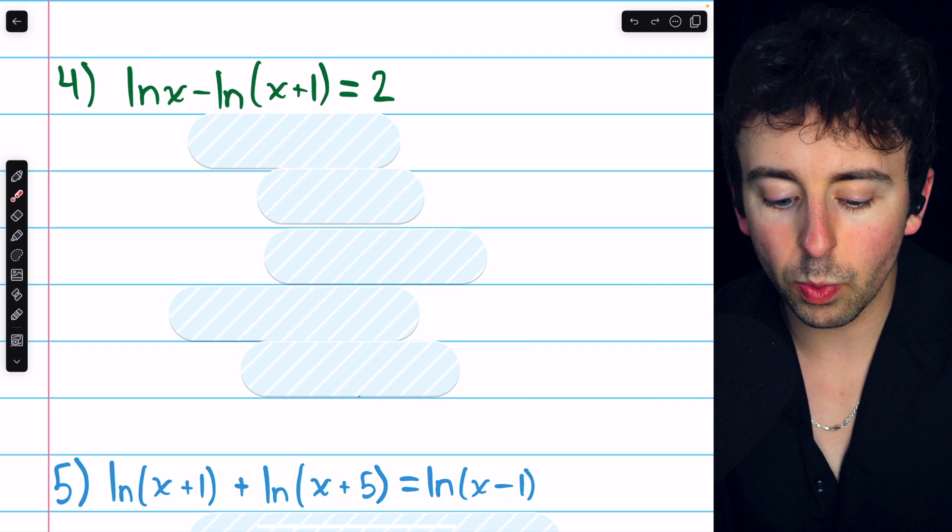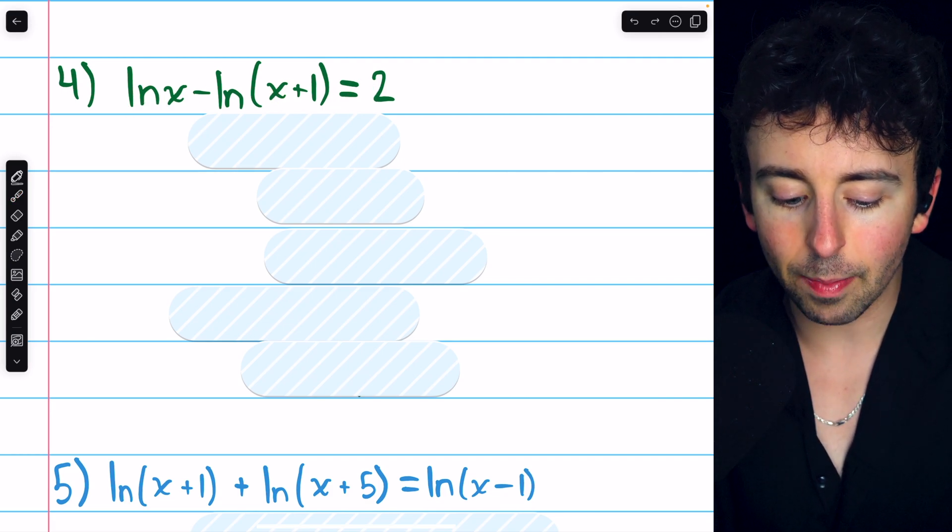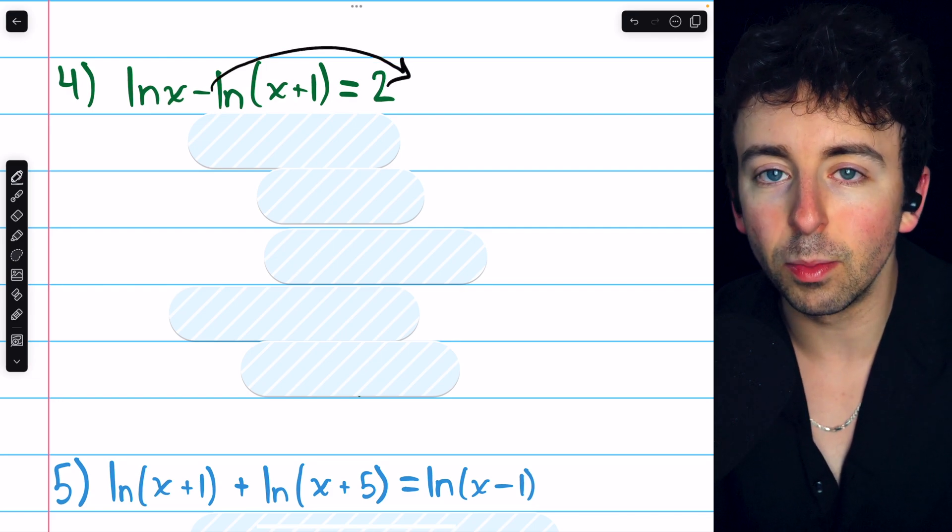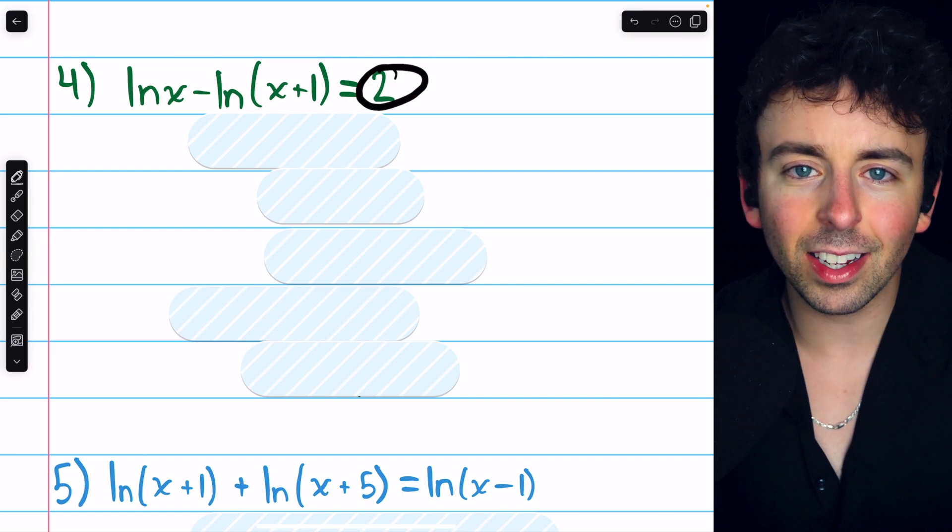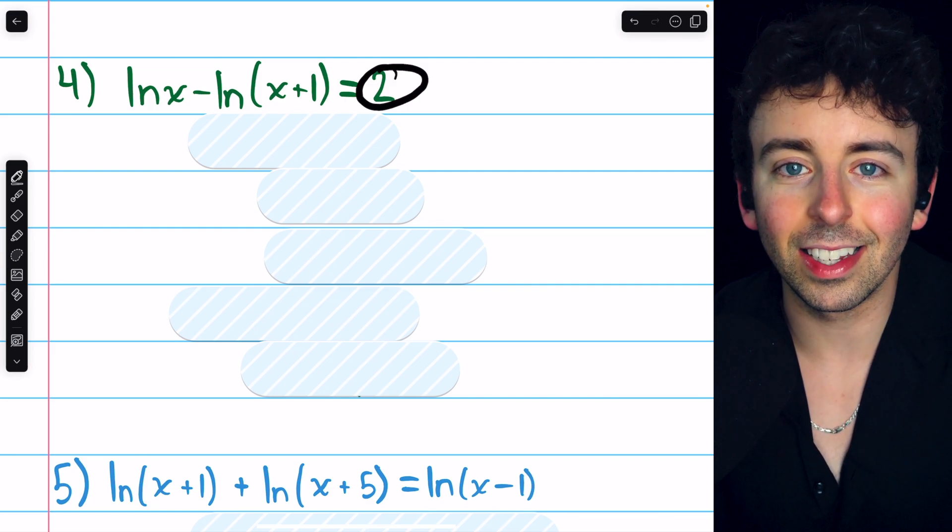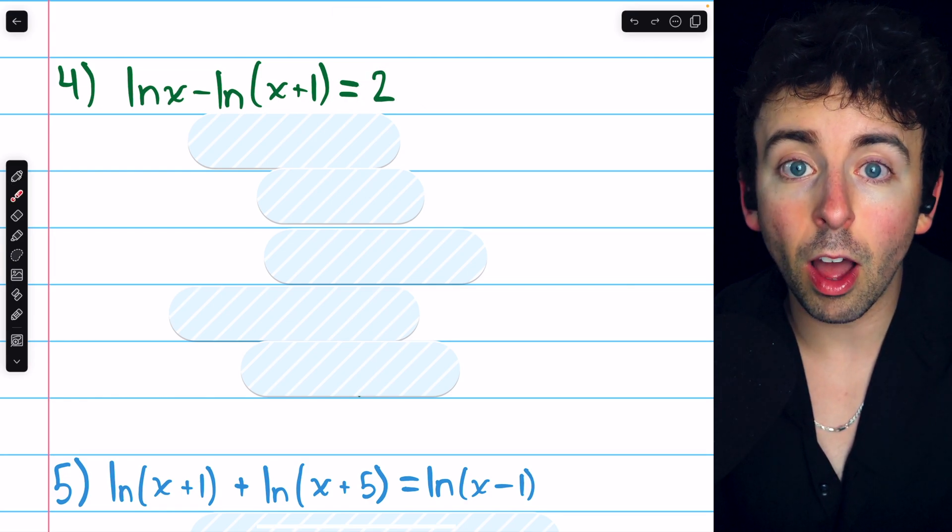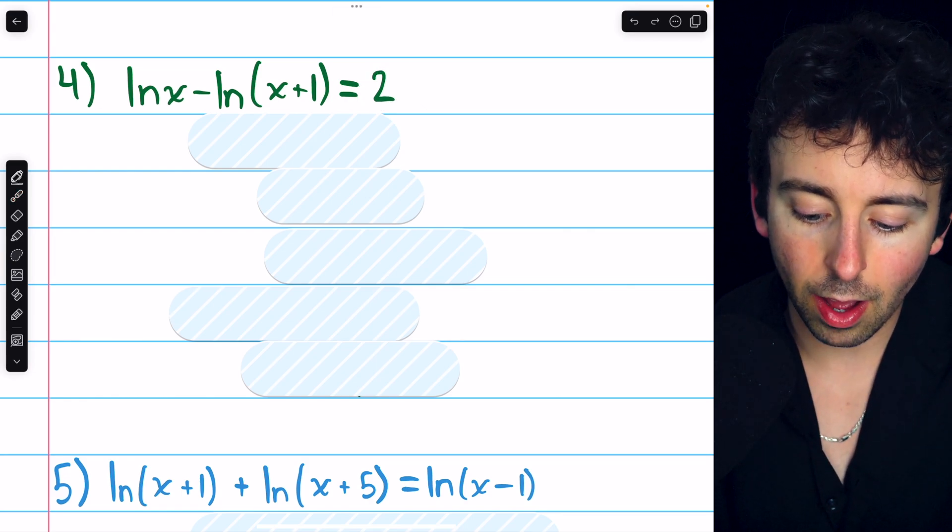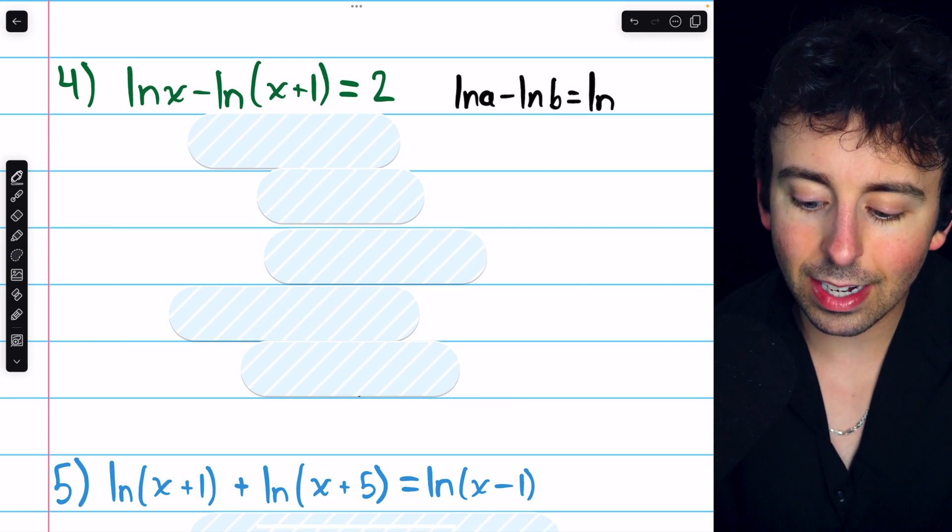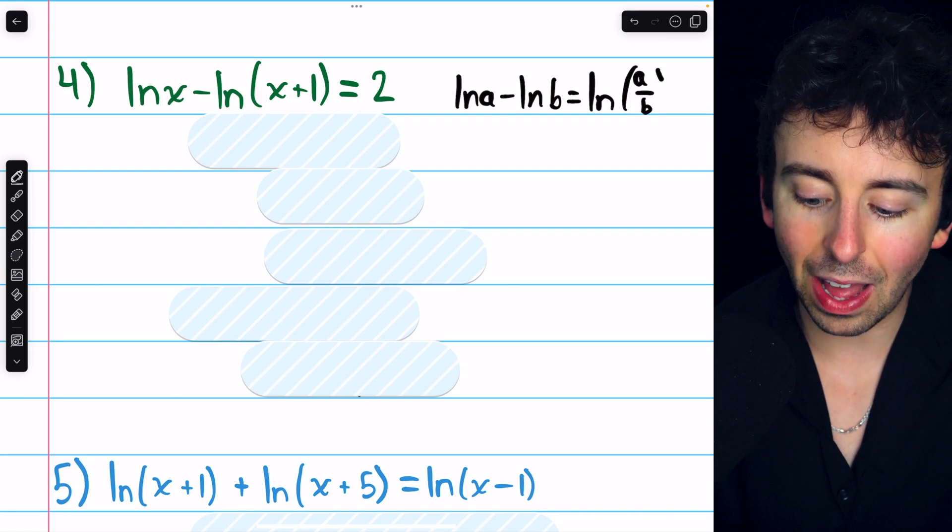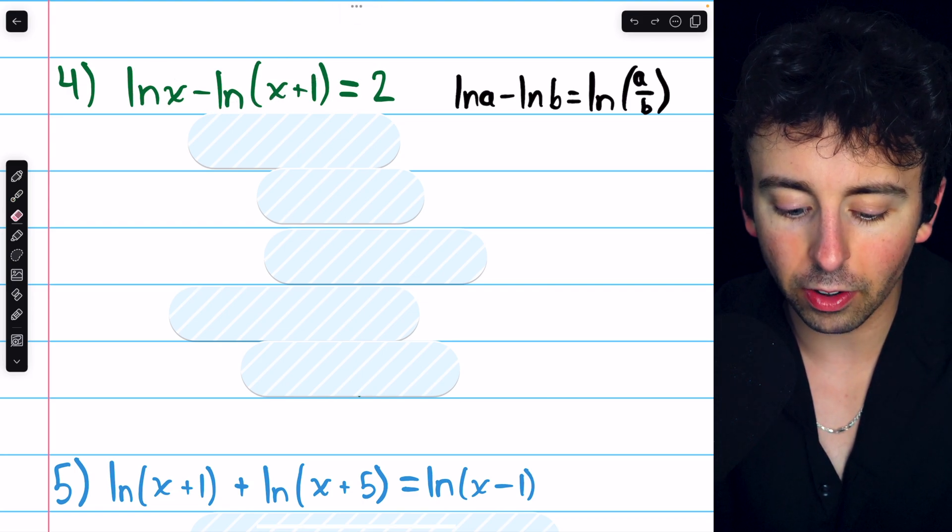Here in problem four, we have lnx minus ln(x plus one) equals two. You may be tempted to add ln(x plus one) to both sides to move it over to the right. But because we have a non-zero constant over there, that's not going to end up working out quite as nicely as it did in previous problems. For this problem, it might be easiest to just use our log properties.